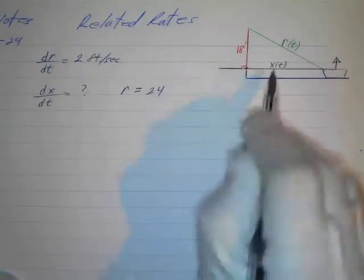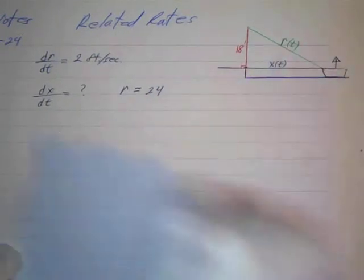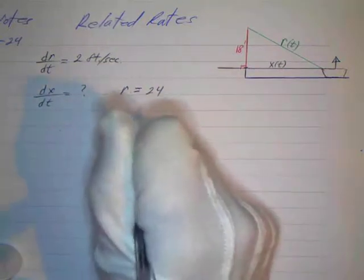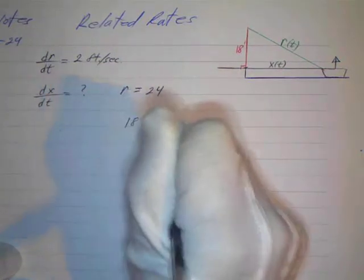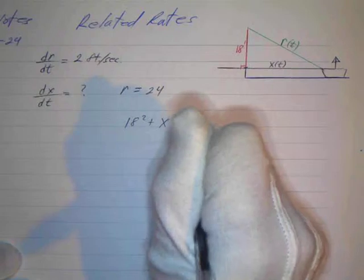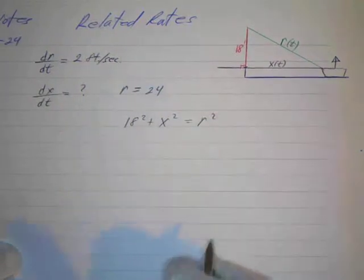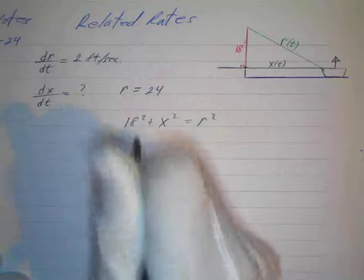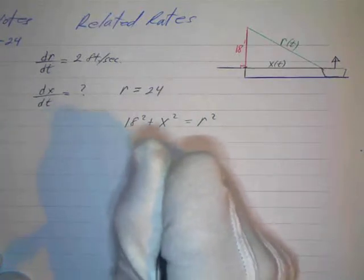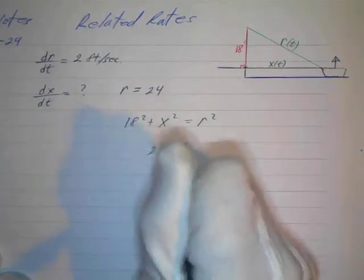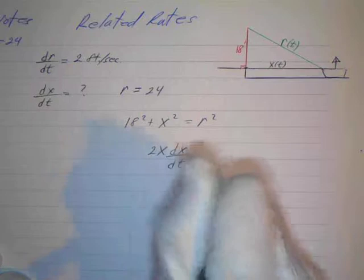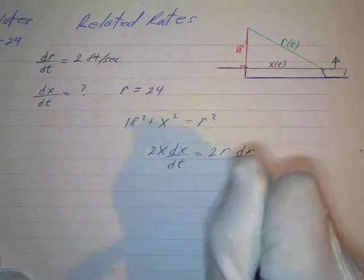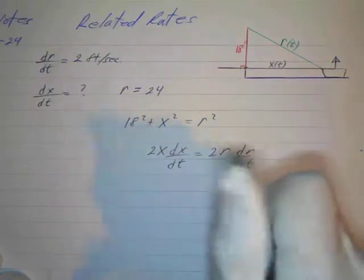So again, we have our Pythagorean relationship, so we can model this mathematically. We can say that 18² + x² = r². And then we can take our derivative. That's going to be zero, so we've got 2x dx/dt = 2r dr/dt. So we've got dx/dt, we've got enough of these so you know what's going on here.